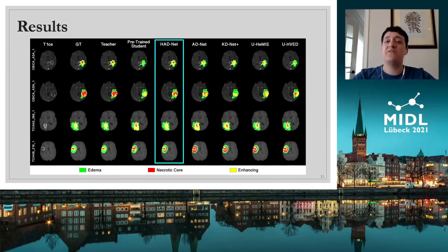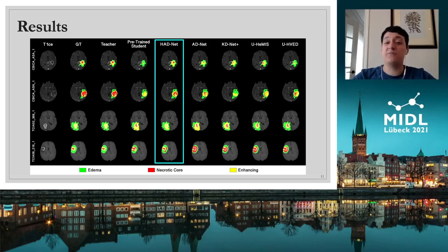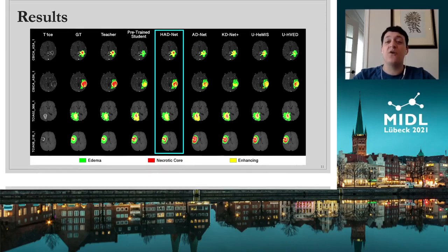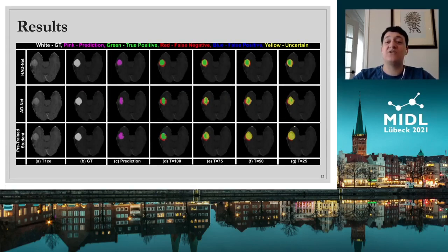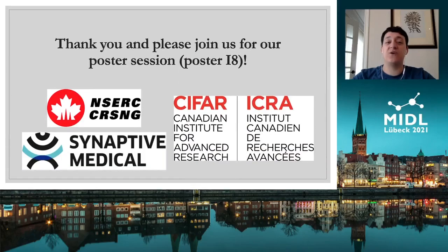HADNET was trained and evaluated on the BraTS 2019 dataset, and was compared to several state-of-the-art models and a number of baselines, including the pre-trained student network and a non-hierarchical version of HADNET. In all, HADNET was able to outperform all competing methods in the segmentation of both enhancing tumors and tumor core, showing improvements that are both substantial and statistically significant. Furthermore, when evaluated on the BraTS 2019 uncertainty challenge, HADNET was able to handily outperform the baselines. Thank you for listening, and please join us for our poster session.